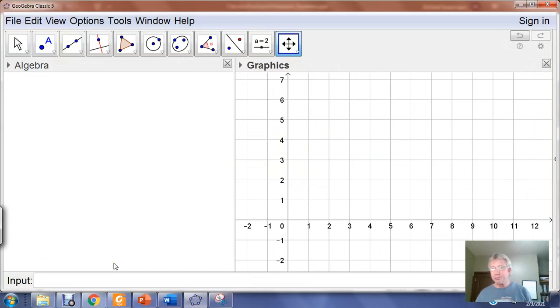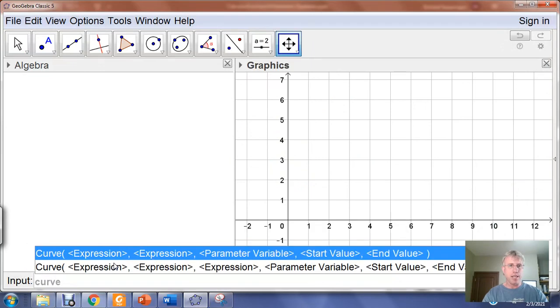What we want to remember is that the graph and the parametric equations that generate the graph are a plane curve. So in GeoGebra, the keyword that you want to type in, the function that you use, is the curve function, C-U-R-V-E. When I type curve into the input bar down here, it's giving me two prompts.